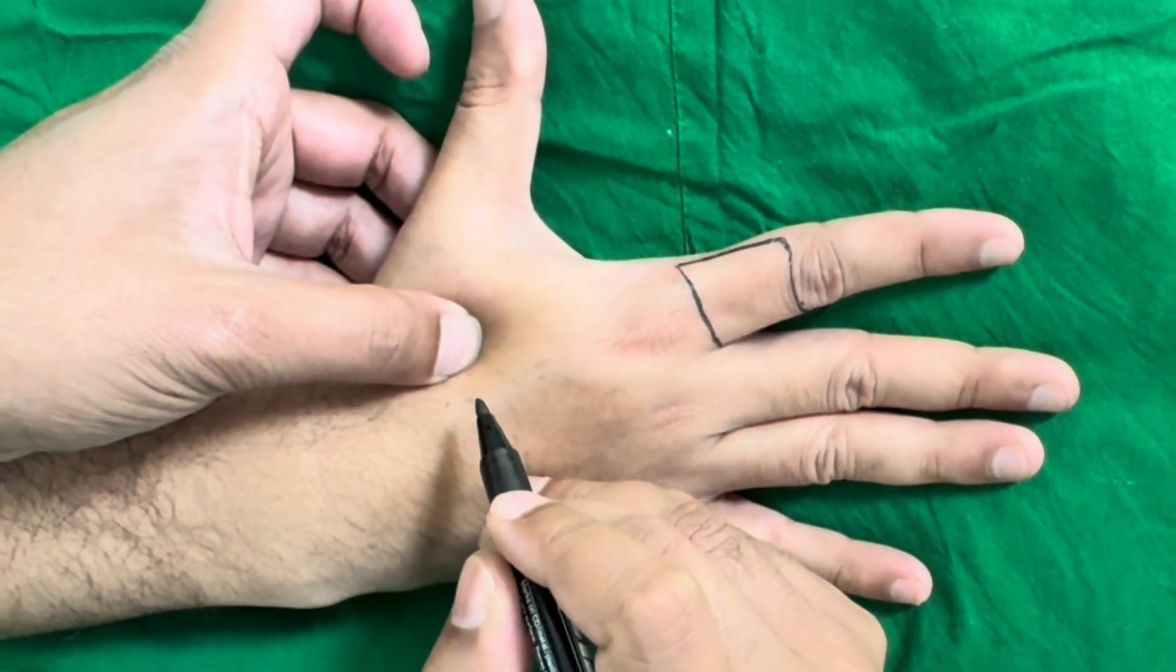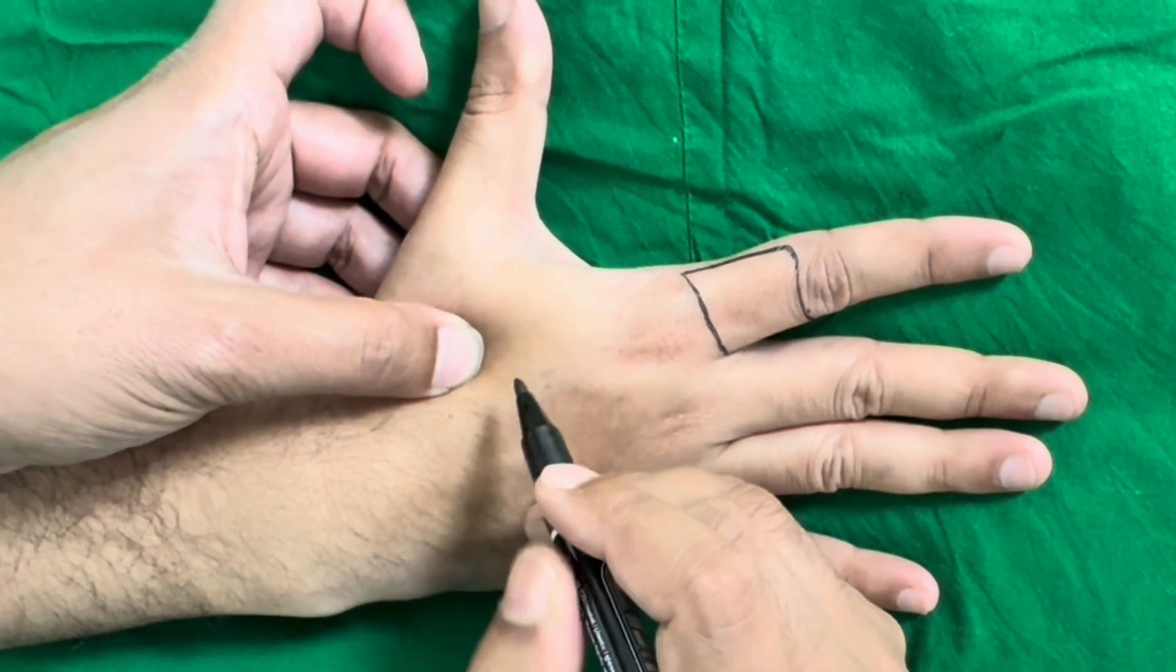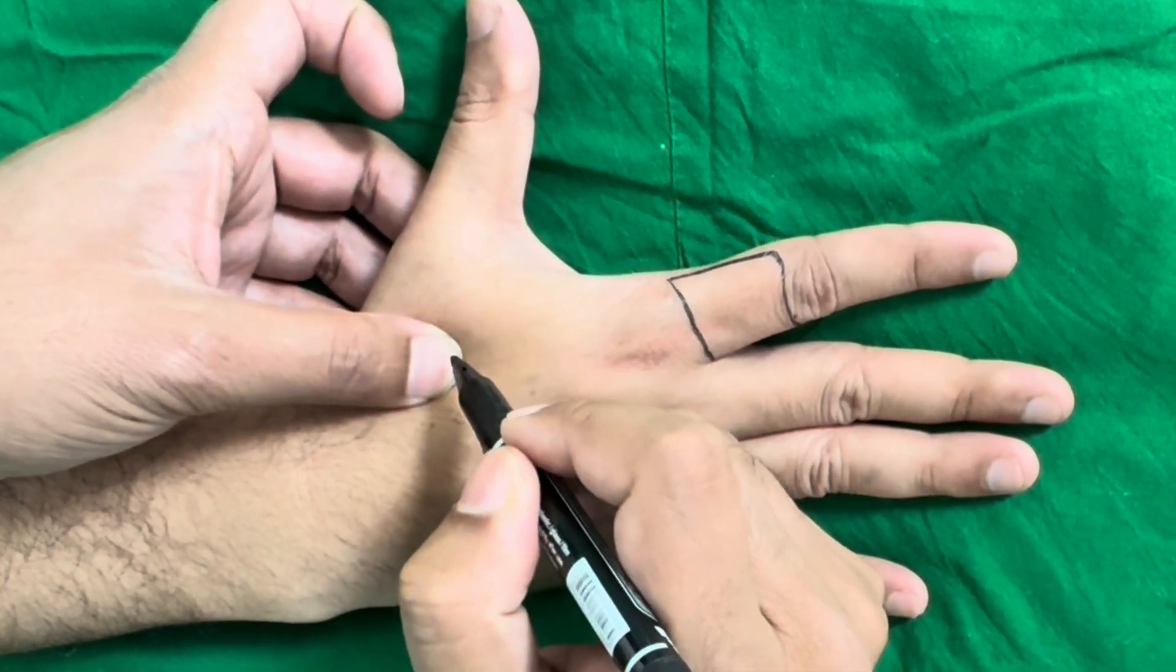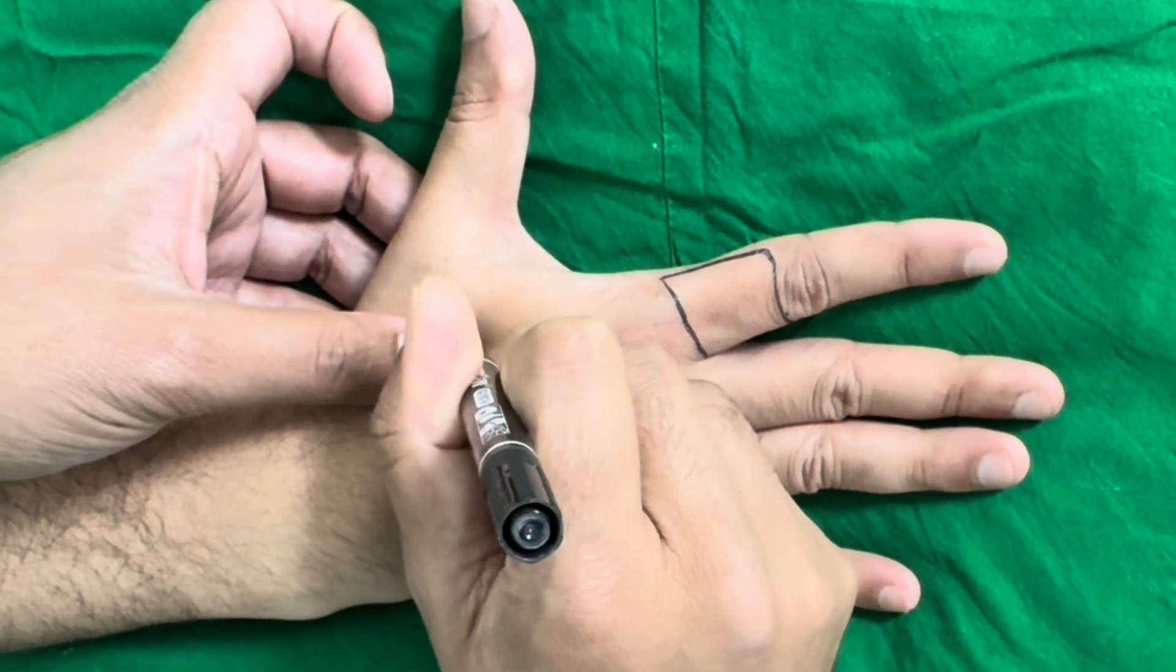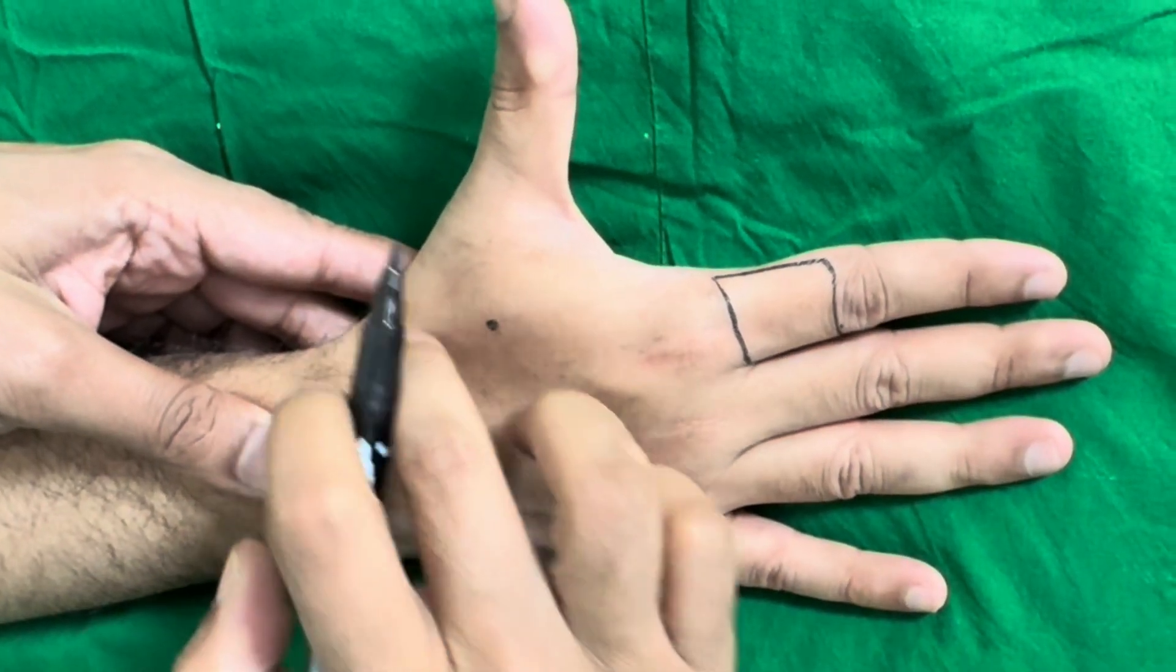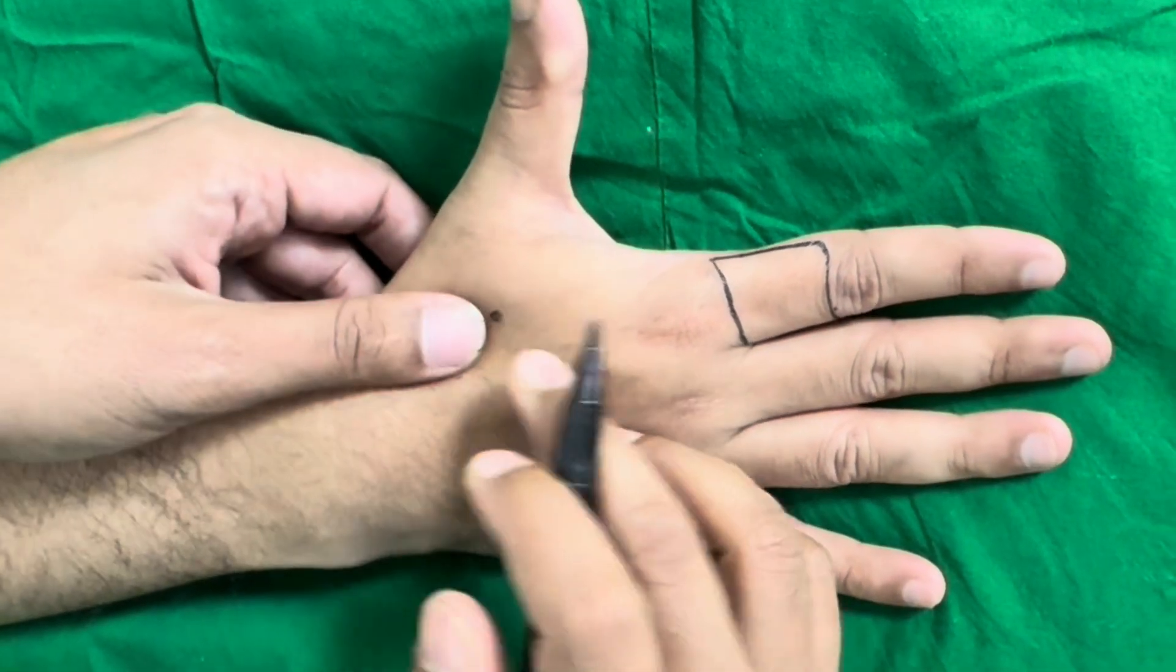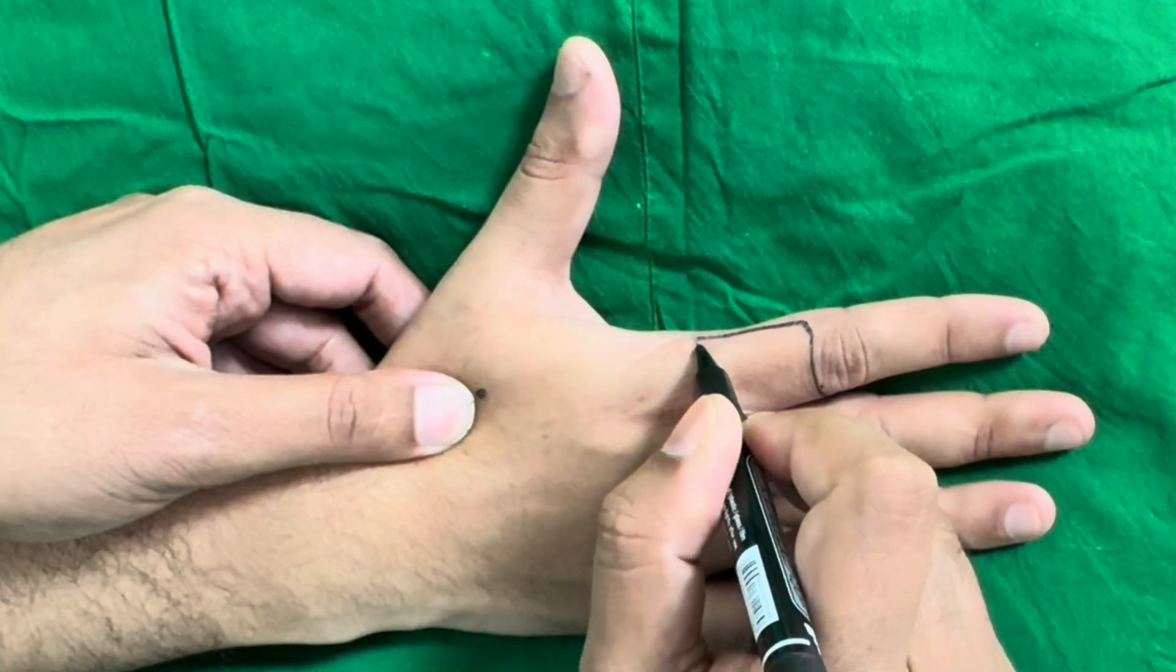That is the junction of the second metacarpal and first metacarpal at the base, just distal to the anatomical snuffbox. The second point is the radial aspect of the first metacarpophalangeal joint.